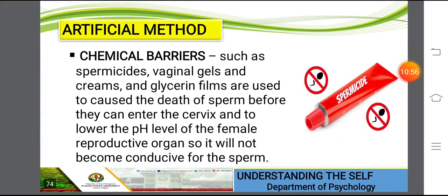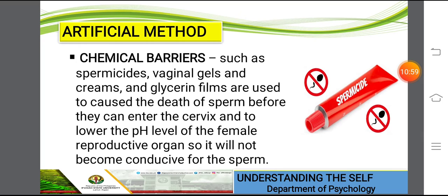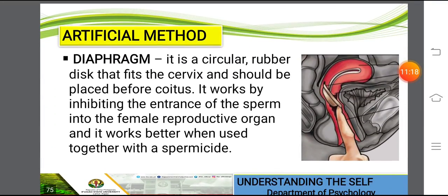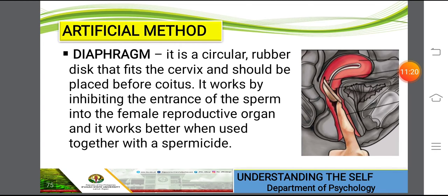Chemical barriers such as spermicides, vaginal gels, creams, and glycerin films are used to cause the death of sperm before they can enter the cervix and to lower the pH level of the female reproductive organ so it will not become conducive for sperm. Another method is the diaphragm — a circular rubber disc that fits the cervix and should be placed before coitus. It works by inhibiting the entrance of sperm and works better when used together with a spermicide.